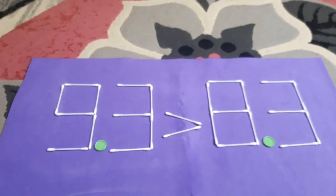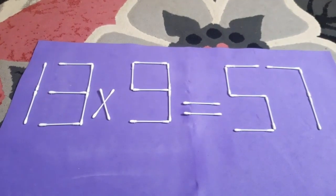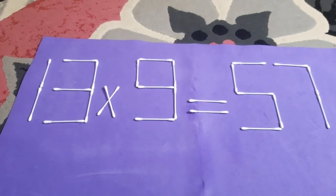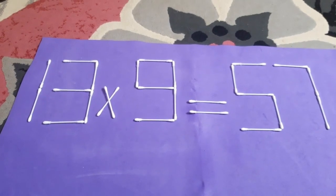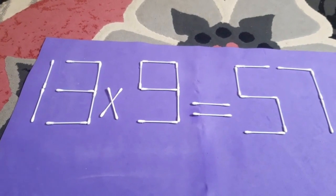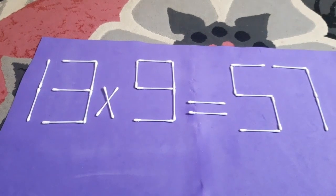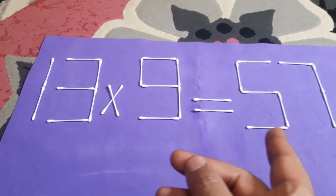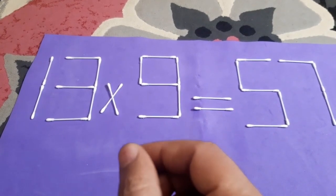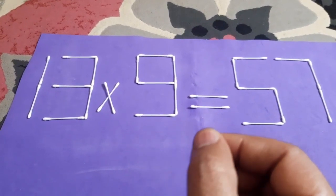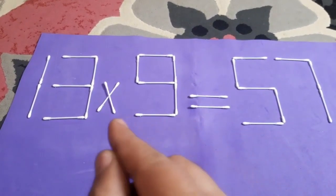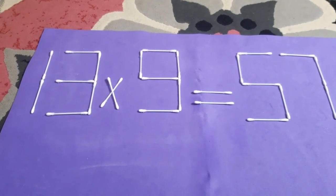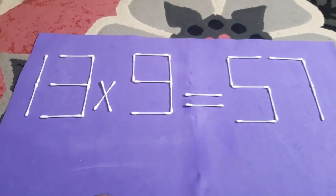Please follow me with the third puzzle. It's a multiplication puzzle: 13 times 9 equals 57. In order to solve the puzzle you are watching, please move only one stick and put it at the proper position. You have 10 seconds in order to reach the answer. Let's start.